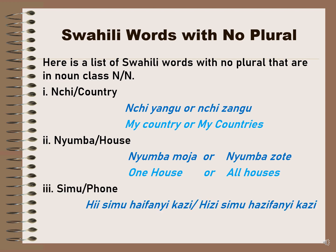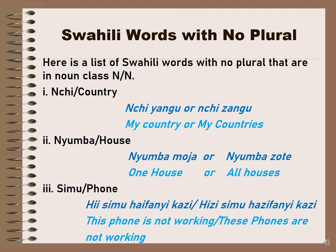For 'simu' meaning phone: 'hii simu haifanyikazi' means this phone is not working, and 'hizi simu haifanyikazi' means these phones are not working. The only thing that determines if the word is singular or plural is the prefix — the word before the noun 'simu.' If you say 'hii,' it means one; 'hizi' means more than one.